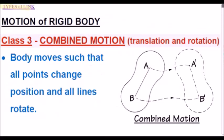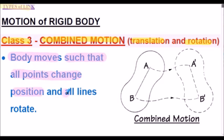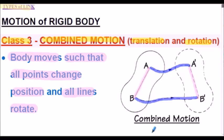Our Class 3 combined-motion link has both translation and rotation. The body moves such that all points change position and all lines rotate. The Type 3 link AB is being rotated to a new position as well as being translated to a new position, hence it has the combined motion. The connecting rod is a typical example of a Class 3 rigid link.